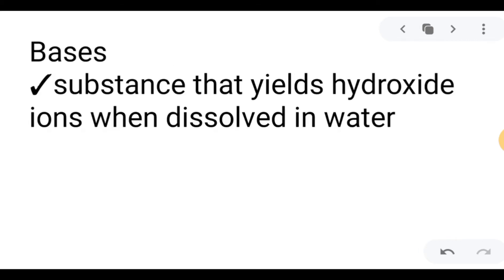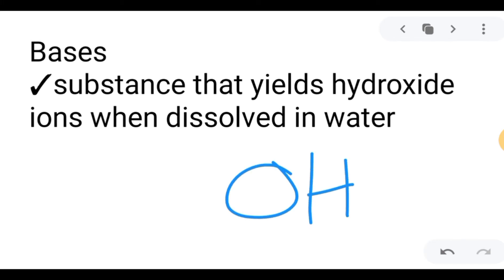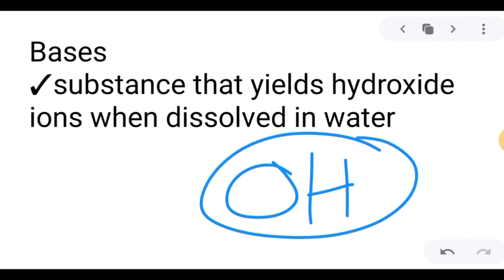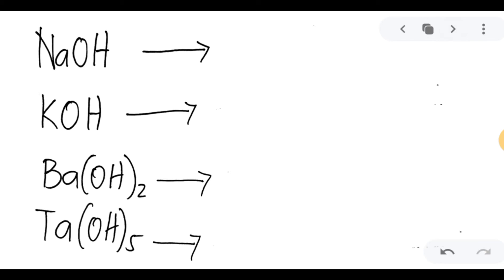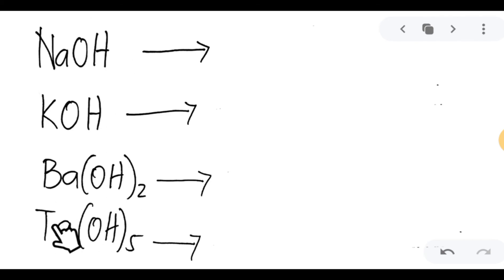Now let us proceed to naming bases. Bases are substances that yield hydroxide ions when dissolved in water. A key feature of bases is that they have a hydroxide ion group attached to an element forming the compound. When placed in water, it dissolves and separates from the compound. To name a base: name the first element, then add hydroxide. If there is only one hydroxide, you do not need to use the prefix mono.